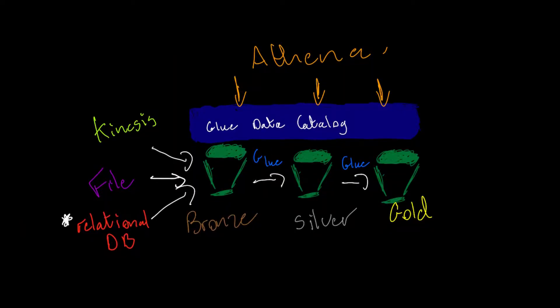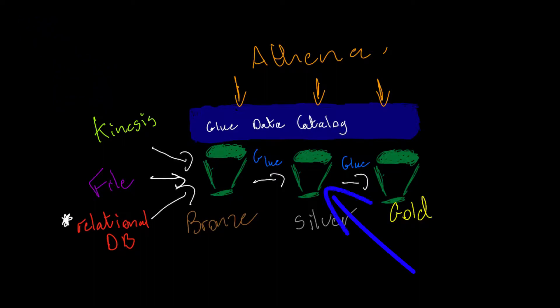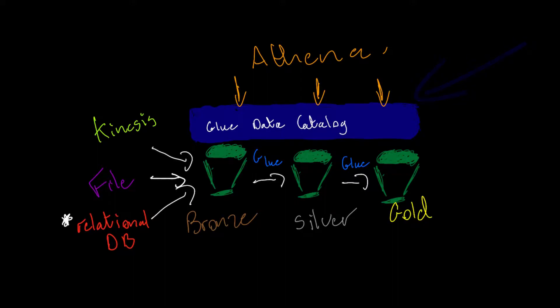As you can see in the diagram, we're going to start with ingest sources. We're going to pass these into our storage layer, which will be our S3, and then we're going to register these in the Glue Data Catalog, and then do some data analytics with them. If that doesn't make sense yet, don't worry — by the end of this series of lessons, it totally will.